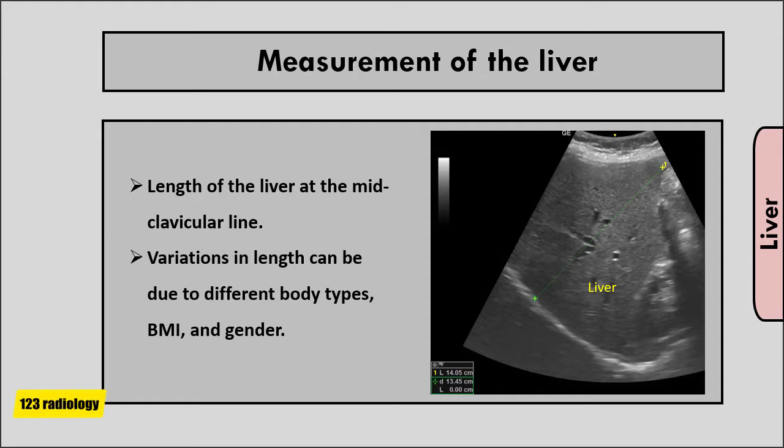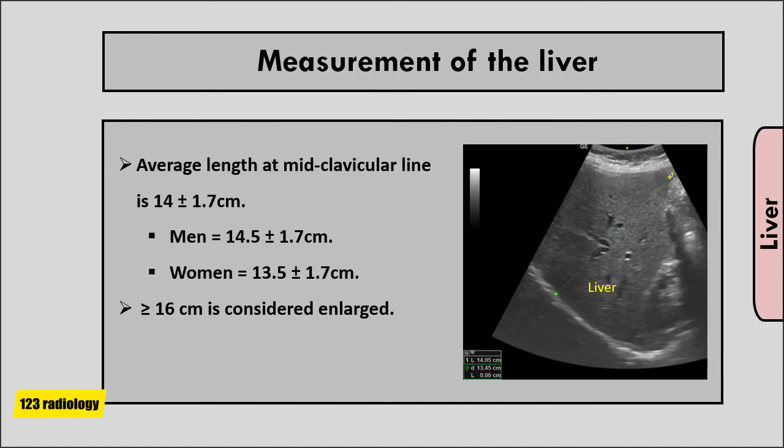The length of the liver at the mid-clavicular line is the most commonly used measurement for evaluating liver size. Various studies have found a range of normal length, with variations due to different body types, body mass index, and gender. The average length at mid-clavicular line is 14 ± 1.7 cm, with a mean length for men of 14.5 ± 1.7 cm. A measurement of 16 cm or more is considered enlarged.